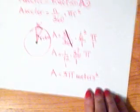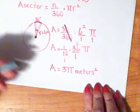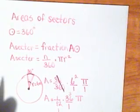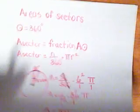Now if you were asked to give an approximation, you would use whichever it happens to be, 22 over 7 or 3.14 to find the area of the sector.